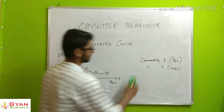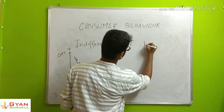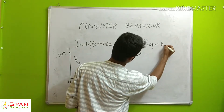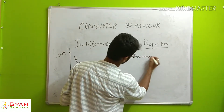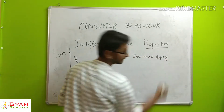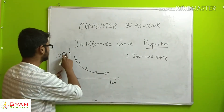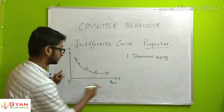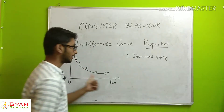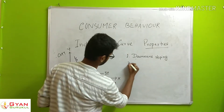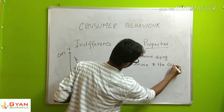The indifference curve has properties. First property: the indifference curve is downward sloping — it has a negative slope. This is the first property.